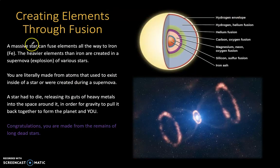Creating elements through fusion. A massive star can fuse elements all the way to iron, Fe, on the periodic table. So if you can see a periodic table in front of you right now, have a look at where iron is. A supermassive star can fuse elements all the way to iron until it's got an iron core. The heavier elements than iron are created in a supernova or explosion of various stars. You are literally made from atoms that used to exist inside of a star or created during a supernova.